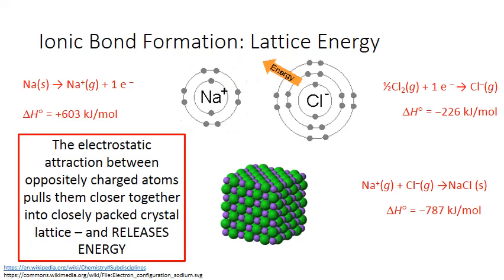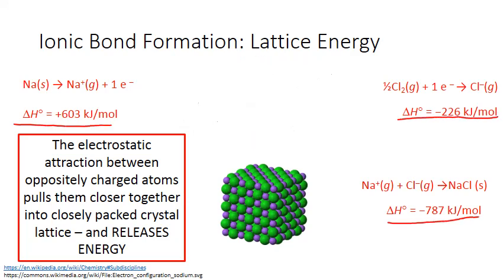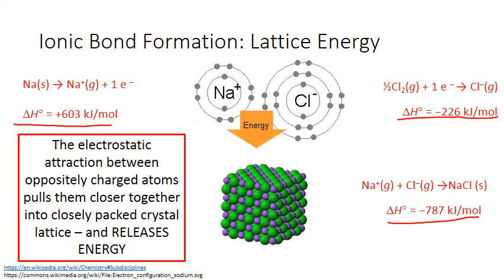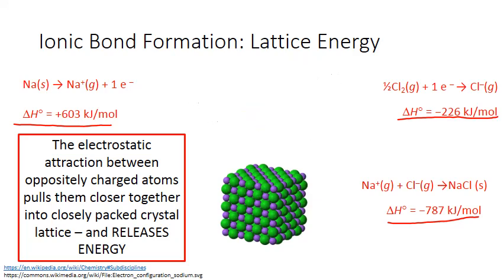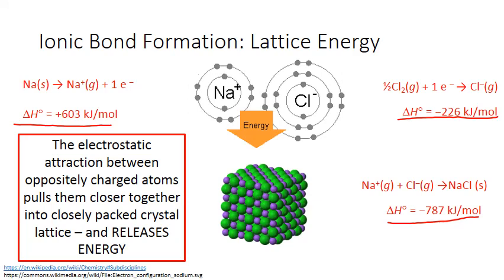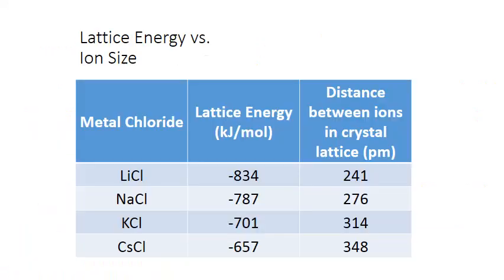If we were to add all of the different enthalpies together associated with the process of forming both the ions and the crystal, we'd find that the net result is a negative enthalpy value, indicating a net reduction in energy for the sodium and chlorine involved. This is the case for all ionic compounds. The largest reduction in potential energy comes from the ions moving together into that crystal lattice.